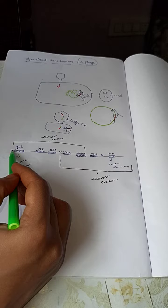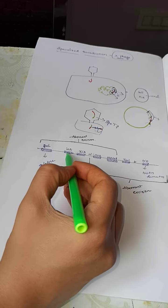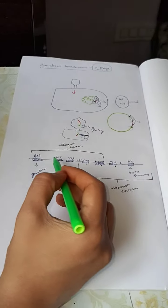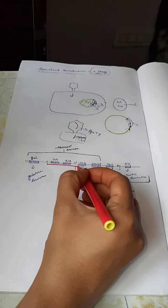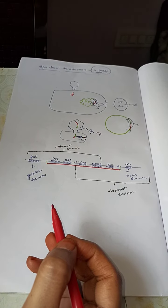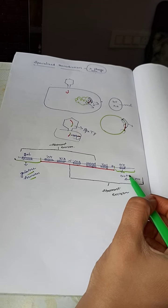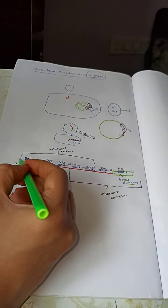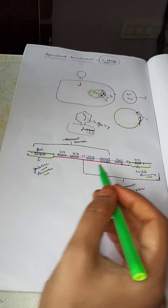Let me take the example of the lambda phage genome to explain this excision in a better way. The lambda phage genome includes the int gene, xis gene, the cos sites, the gene for head synthesis, and genes for tail synthesis. Flanking the viral genome are the gal gene, responsible for galactose formation, and the bio gene, responsible for biotin formation — these are genes from the host bacterial genome.